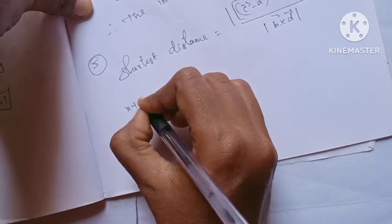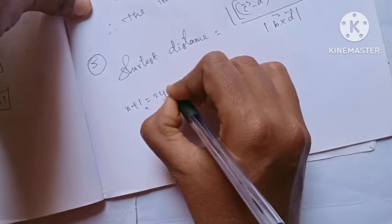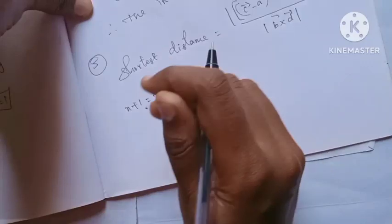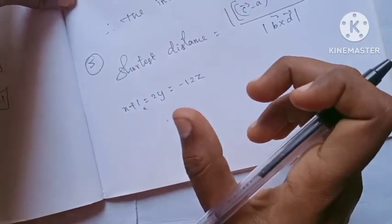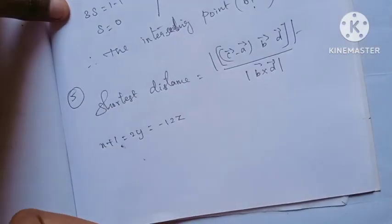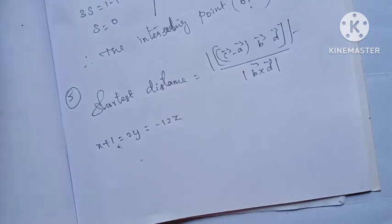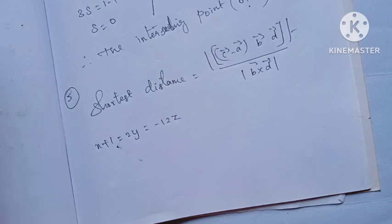So the first line: x+1 = y/1 = z/(−1/12). Here we can see the Cartesian partition format. The standard form is: (x − x1)/b1 = (y − y1)/b2 = (z − z1)/b3. So this is the way we identify the components.